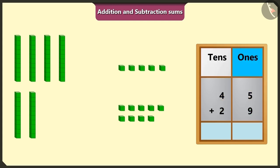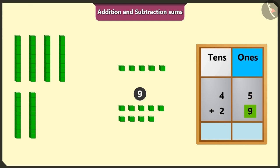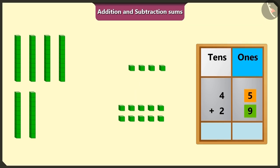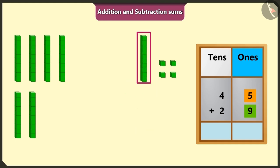We have to add the numbers of the box of ones first. Here, if we will add 5 ones to the bigger number 9, after 9 it will be 10, 11, 12, 13 and 14. There are 4 ones and 1 ten in 14.